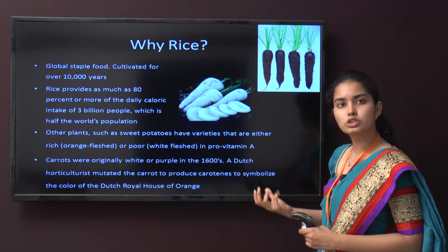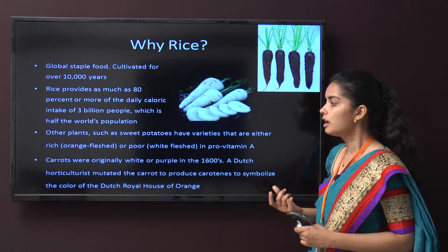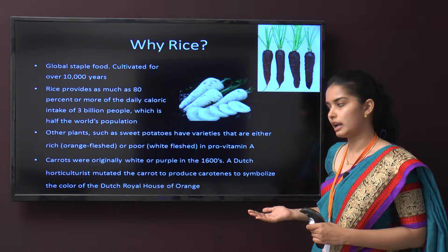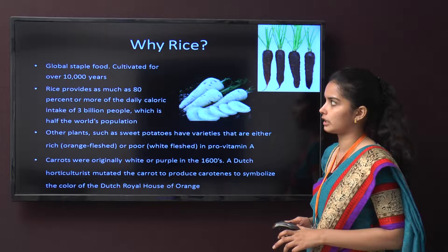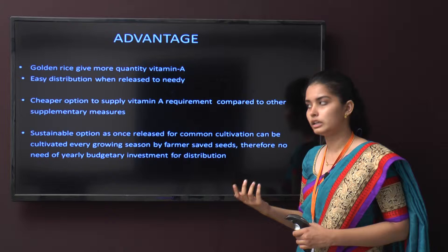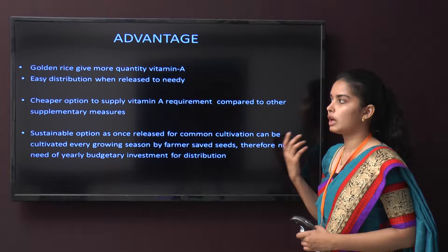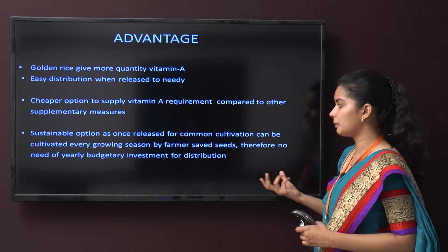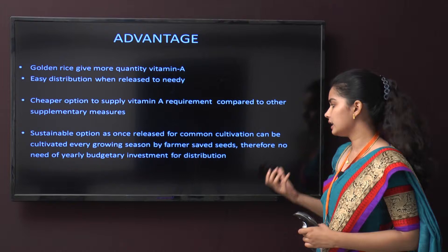Interestingly, carrots were originally white or purple until the 1600s, when Dutch horticulturists mutated them to produce orange carrots symbolizing the color of the Dutch royal house. That is why we get orange carrots today. The advantages of golden rice include greater vitamin A supply through biofortification, easy distribution when released to those in need, and being a cheaper option compared to supplementary vitamin A measures like medicines. It is also a sustainable option, as once released it can be cultivated every growing season using farmer-saved seeds with no ongoing distribution investment needed.